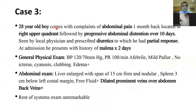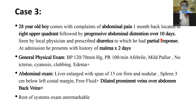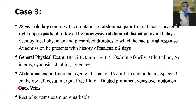The third case is a 28-year-old male presenting with abdominal pain one month back, predominantly in the right upper quadrant with a VAS score of about 7 out of 10, followed by progressive abdominal distension over the next 10 days. He was seen by a local physician, prescribed diuretics, labeled as cirrhosis, but the diuretics did not respond well. He came with melena for two days. He is not hypotensive, has mild pallor, and edema. Abdominal examination shows an enlarged liver of 15 cm — firm and nodular — spleen of 3 cm, free fluid, prominent veins over the abdomen, and interestingly, back veins.